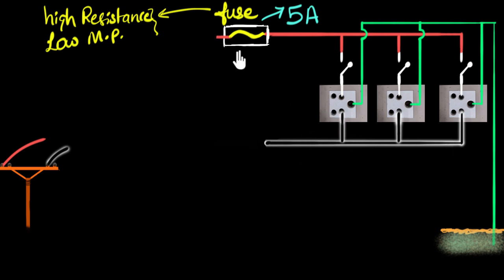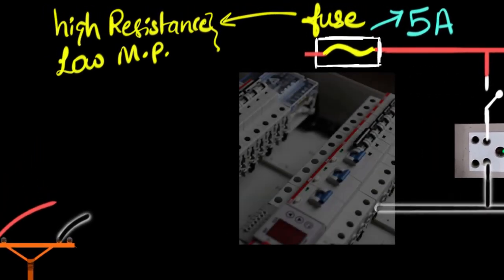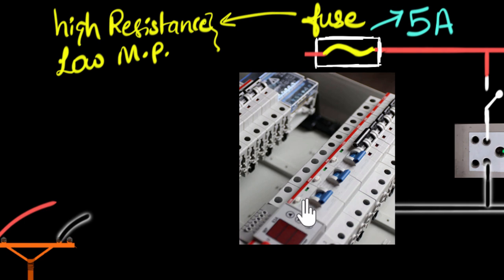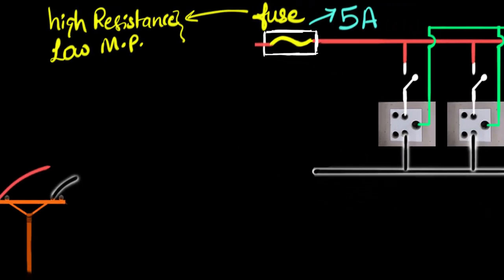And of course, you may be wondering, hey, I don't see these fuses in my house today. Where are they? Well, today they have been replaced by these new devices called circuit breakers. They work on a very similar principle, but over here, they don't melt. You don't have to change the wire every time a fuse blows up. They just disconnect automatically. A little bit more advanced, but the idea is the same. So let's not get into that.